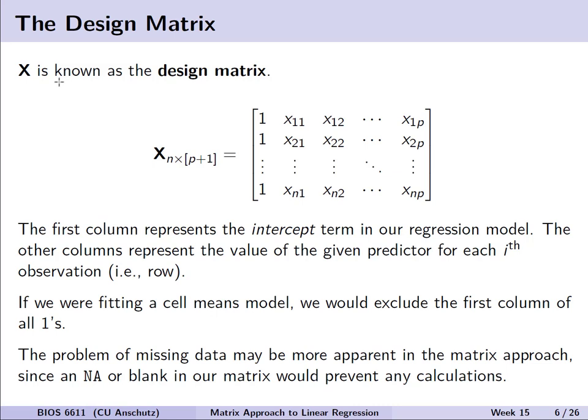As mentioned, X has a special role as the design matrix. Each column represents information contributed by a certain predictor. The first column is a constant value of 1, representing the intercept term or beta-naught estimate in most models. The remaining columns represent beta 1 up to beta p. If fitting a cell means model, we would exclude that first column of all ones.